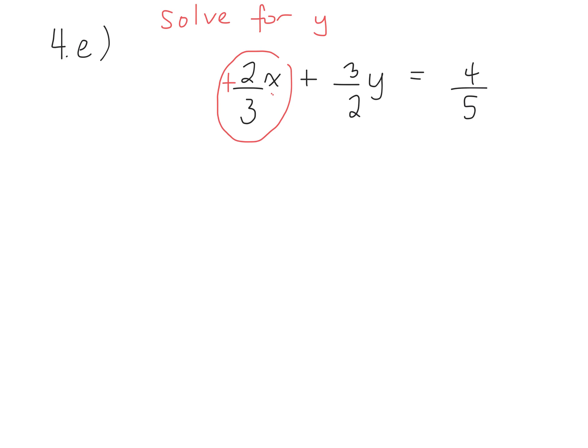It's a positive, so I have, yep, take away 2 over 3x. I've eliminated it. So what do I need to do to the right side? Which is? Plus? Take away? Take away 2 over 3x.